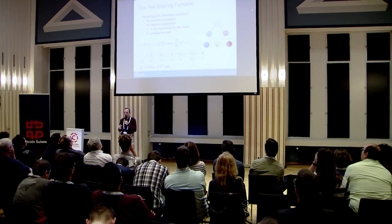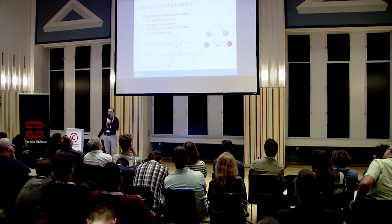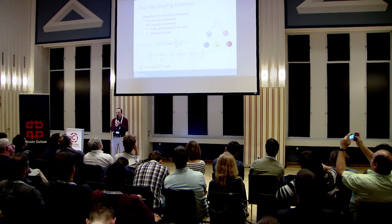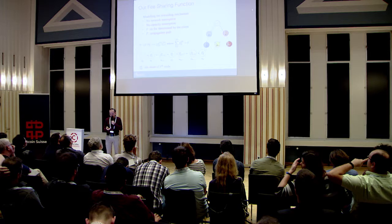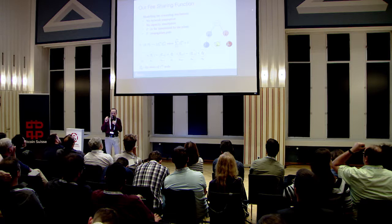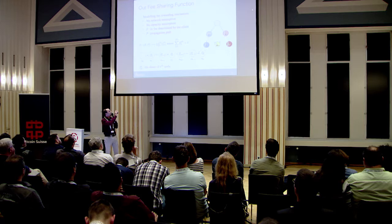We formalize the fee sharing function as follows. We have a fixed fee F determined by the client, and we divide this fee among the propagation paths. The notation F_i^k denotes that the total propagation path length is k, and F_i^k is the share of the i-th node in that path.